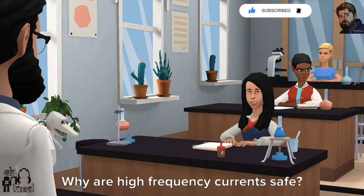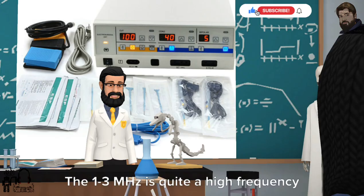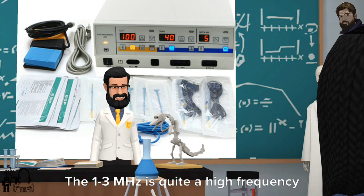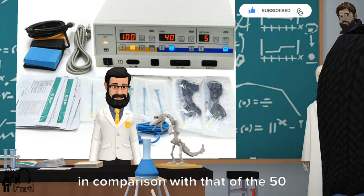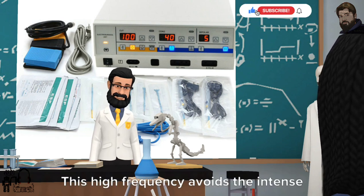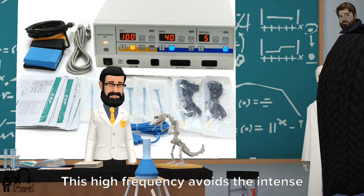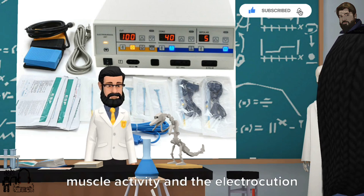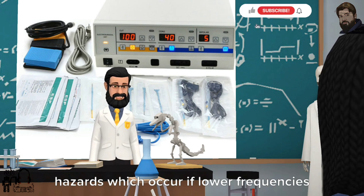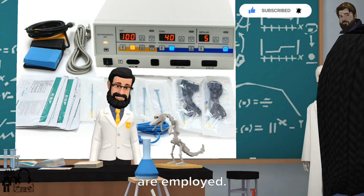Why are high frequency currents safe? The 1-3 MHz is quite a high frequency in comparison with that of the 50 Hz main supply. This high frequency avoids the intense muscle activity and the electrocution hazards which occur if lower frequencies are employed.